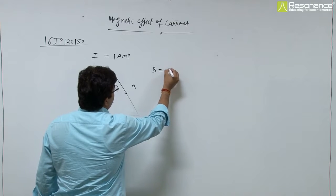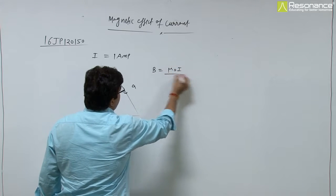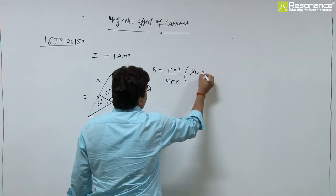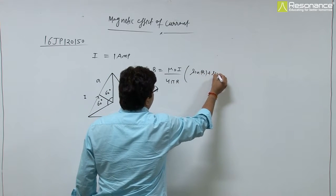The magnetic field due to one wire is μ₀I/(4πr)(sin θ₁ + sin θ₂).